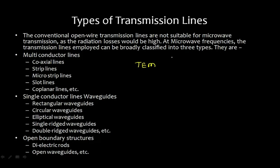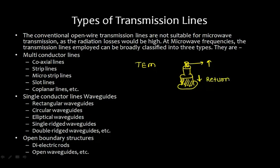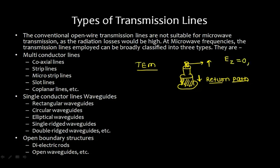Whenever you have a forward path and a return path — for example, in a coaxial cable — you have an inner conductor, an outer conductor, and shielding. Energy is transmitted in one direction via the inner conductor and returns via the outer conductor. Whenever you have a multi-conductor line or a well-defined return path, that transmission line supports the transverse electromagnetic mode, where the electric field and magnetic field are transverse to the direction of propagation, so Ez = 0 and Hz = 0.